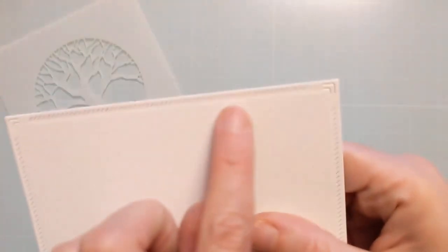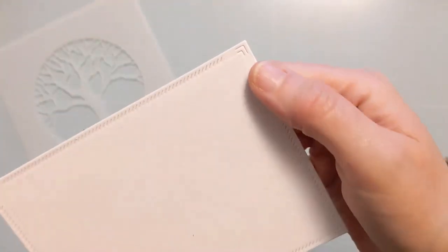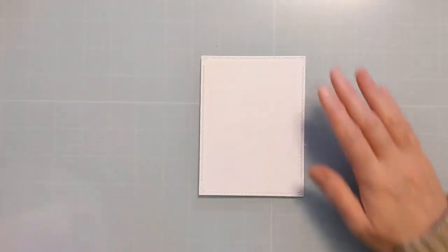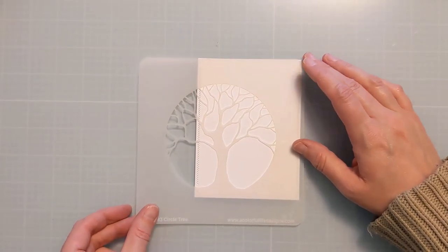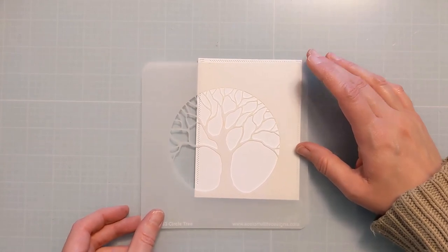You can see here I'm just cutting down a panel with this stitched edge die. This is from LDRS, which is another small business in Michigan, and I'm just going to kick this stencil off to the left side of the composition.